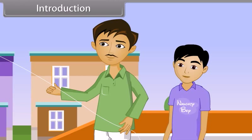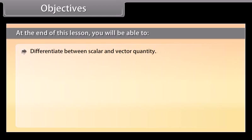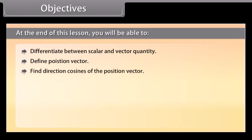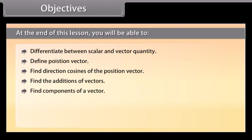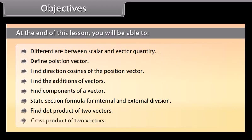In this lesson you will learn the operations on vectors. At the end of this lesson, you will be able to: differentiate between scalar and vector quantity; define position vector; find direction cosines of the position vector; find additions of vectors; find components of a vector; state section formula for internal and external division; find dot product of two vectors; and cross product of two vectors.